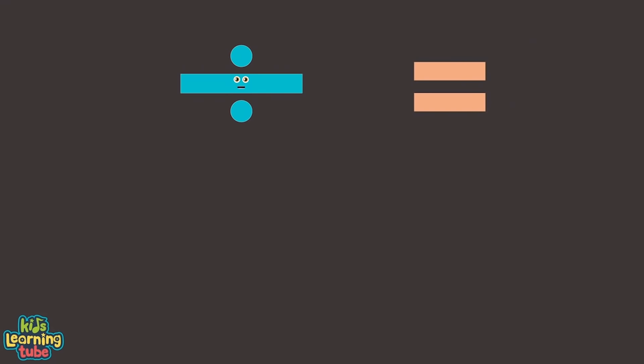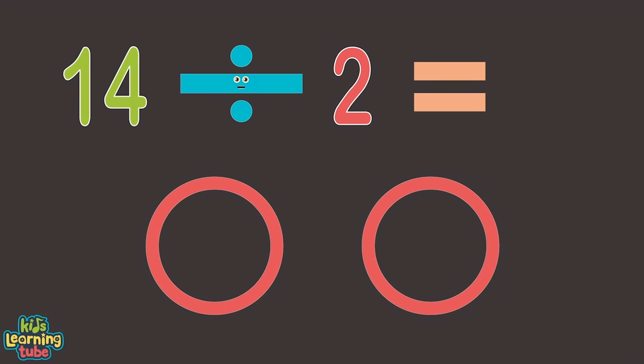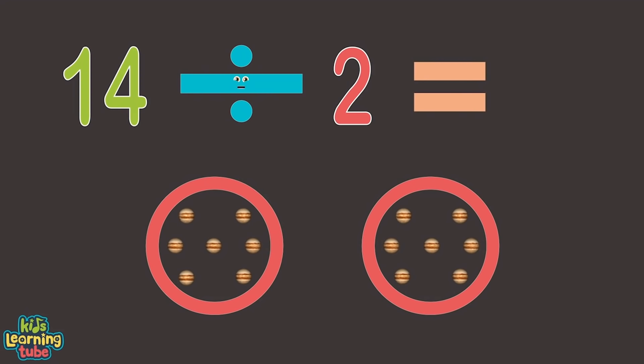You're doing great, let's move on to the next equation. After you learn to divide any number, you'll be a math sensation. Let's take this fourteen and divide it by two. Let's see how many times two fits into fourteen and then we will be through. Let's make two circles that will represent the two, then add a single dot in each until we reach the number fourteen. One, two, three, four, five, six, seven, eight. You're doing great. Nine, ten, eleven, twelve, thirteen, fourteen. Your counting is really swell.